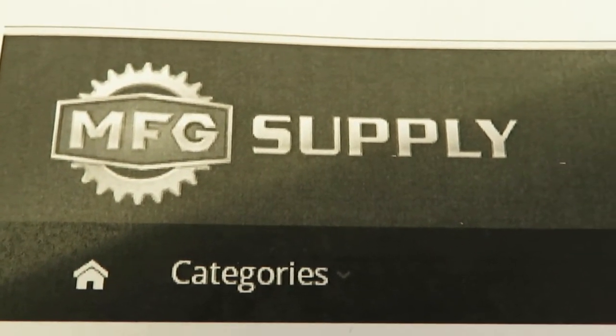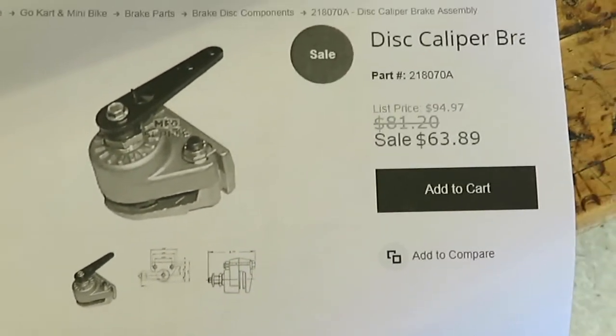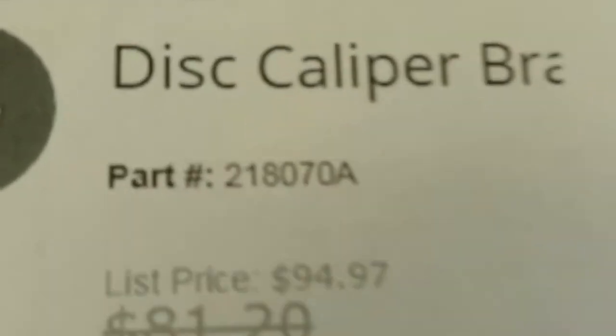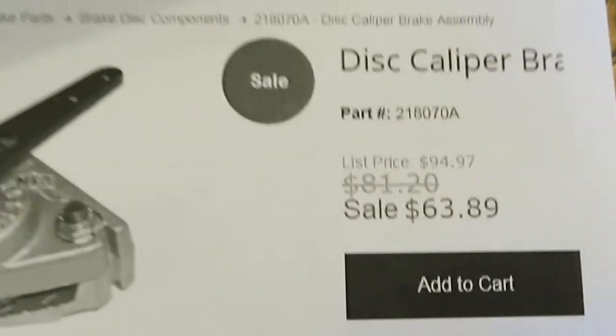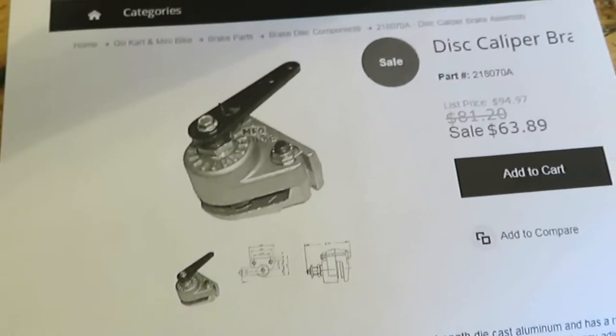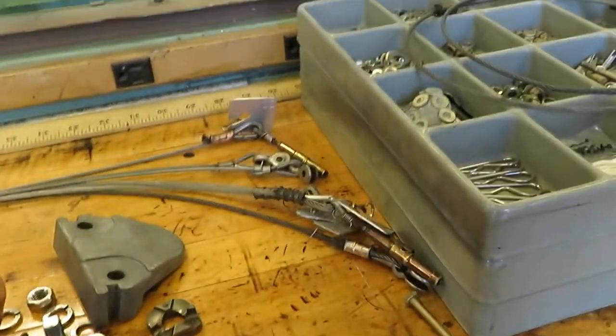These are from MFG Supply. They are just your basic go-kart caliper. That's the part number, if you're interested. They're good little units, but what I did is I made my axle to accept these and there they are. Real cheap to get parts, pieces, parts too.